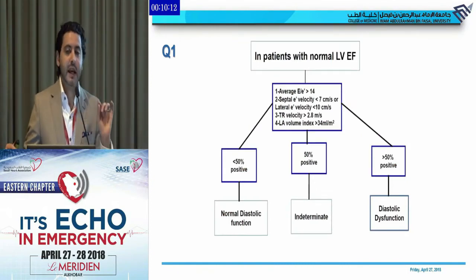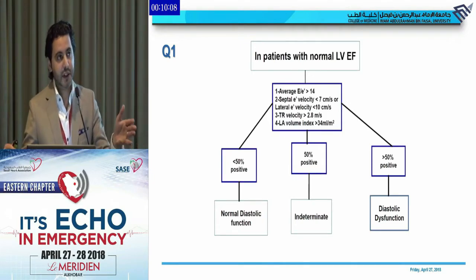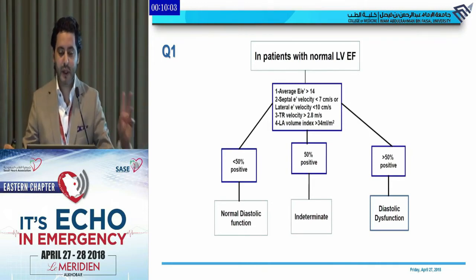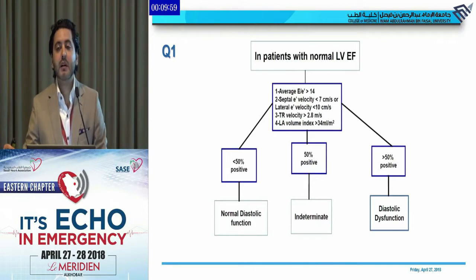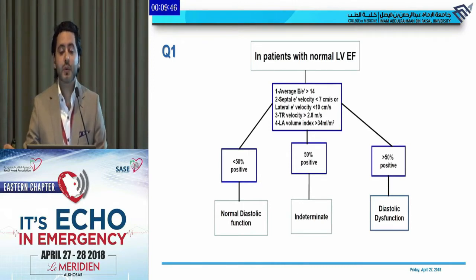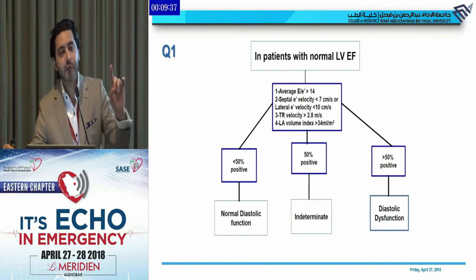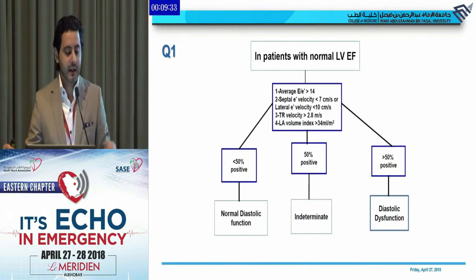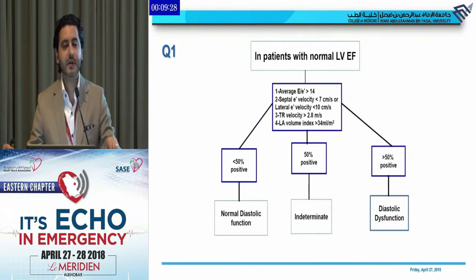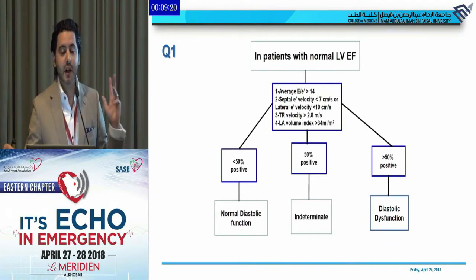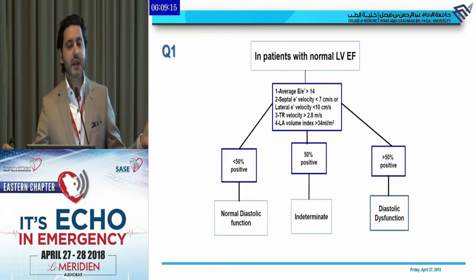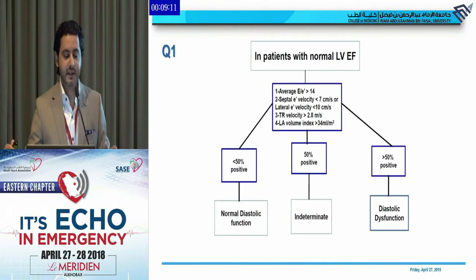Back to question number one — is diastolic function normal? If systolic function is absolutely normal, we apply this algorithm using the four parameters. Is average E over E prime more than 14? Is the septal E prime velocity less than 7, or the lateral E prime less than 10? Is TR velocity more than 2.8? Is the LA volume index more than 34 ml per meter squared? If most answers are yes, diastolic function is abnormal. If most are no, it is normal. With four items, two normal and two abnormal yields an indeterminate result requiring further assessment.